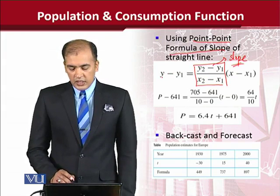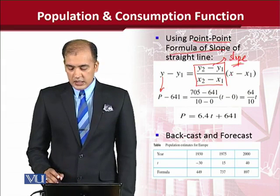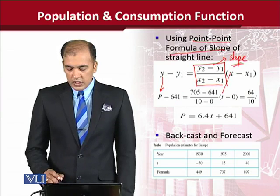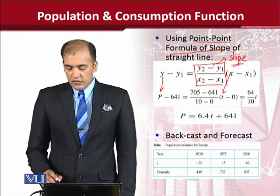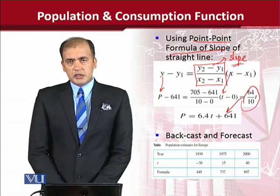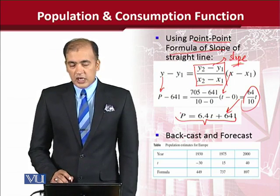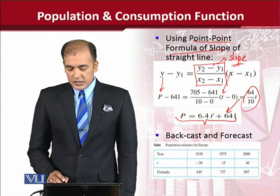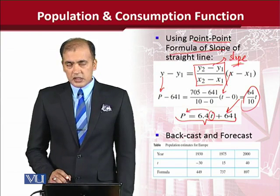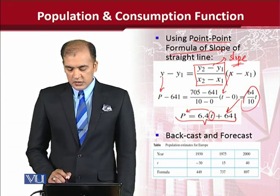Substituting the values — where y is population and x is time — and simplifying, we obtain a linear equation in standard form showing that population depends upon time. It changes over time and has a specific slope and intercept.